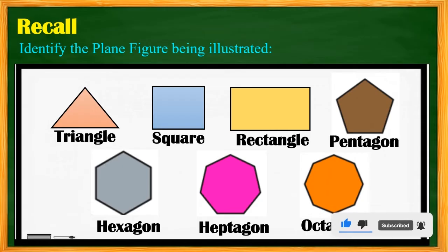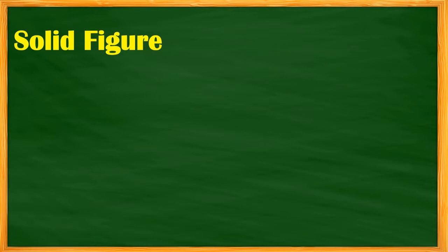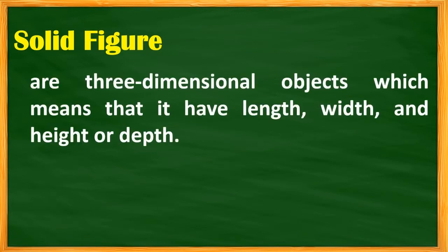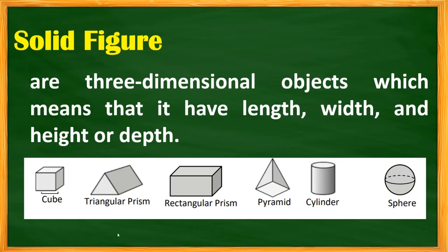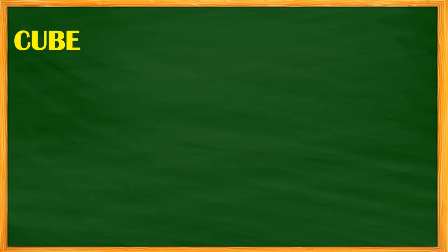Now let's proceed to solid figures. A solid figure is a three-dimensional object, which means it has length, width, and height or depth. Examples of solid figures include the cube, triangular prism, rectangular prism, pyramid, cylinder, sphere, and many more. Today let's discuss each one starting with the cube.